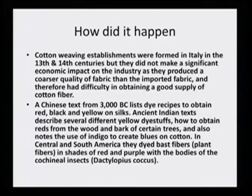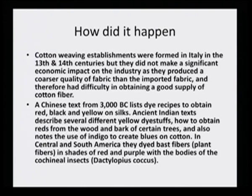A Chinese text from 3000 BC lists dye recipes to obtain red, black and yellow on silks. Ancient Indian texts describe several different yellow dye stuffs, how to obtain reds from the wood and bark of certain trees, and note the use of indigo to create blues on cotton. In Central and South America, they dyed blast fibers — plant fibers — in shades of red and purple with the bodies of the cochineal insect. Indian people mainly used reds from wood and bark and indigo, and yellow — the tesu story — was primarily used in India.